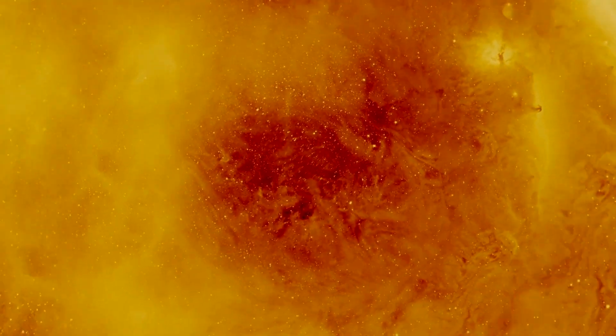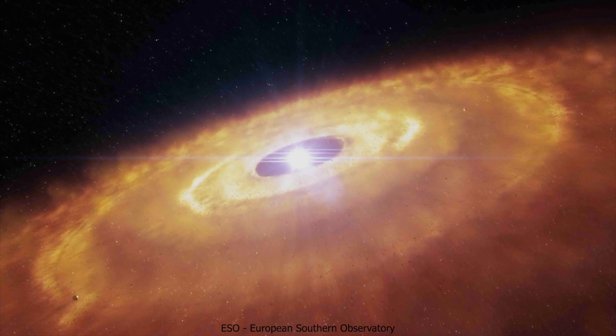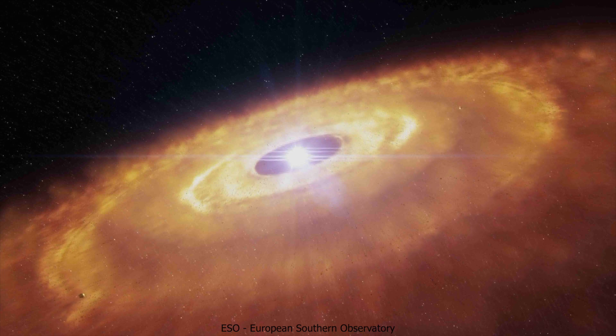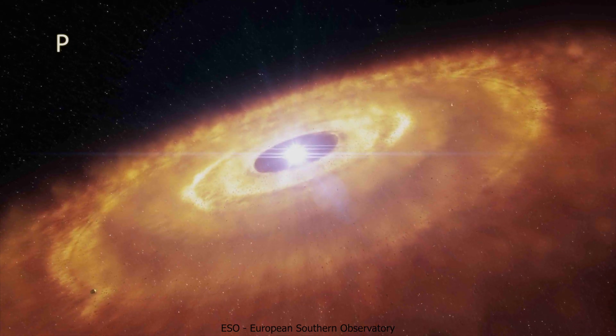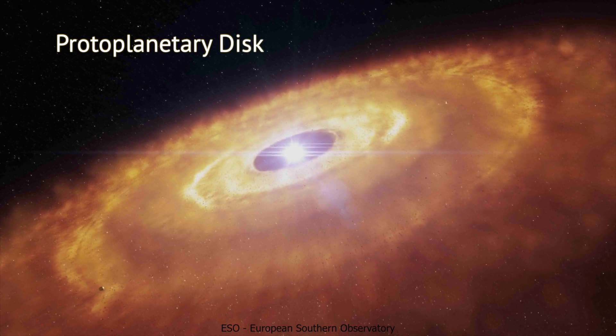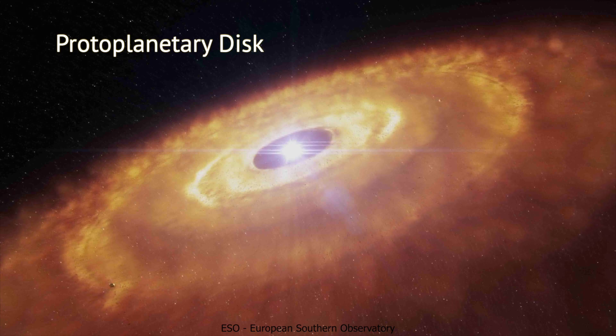As more and more mass clumped up, the power of gravity grew stronger. Eventually, 99% of the cloud's mass became concentrated in one central ball. Then it ignited. The remaining mass was flung out into a disk, spinning around the newly born Sun.